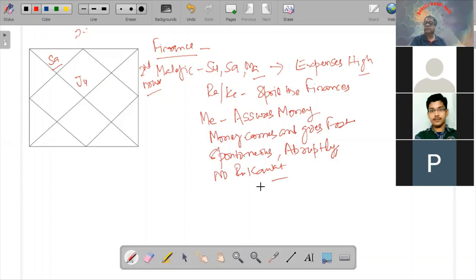Venus, regular flow of money. Agar Venus plus Mercury hai, lot of inflow and too many sources of income.